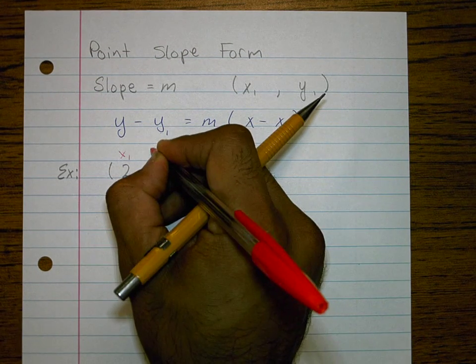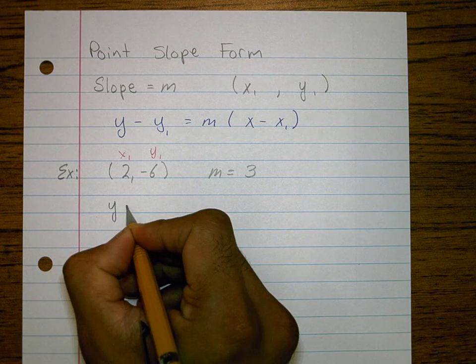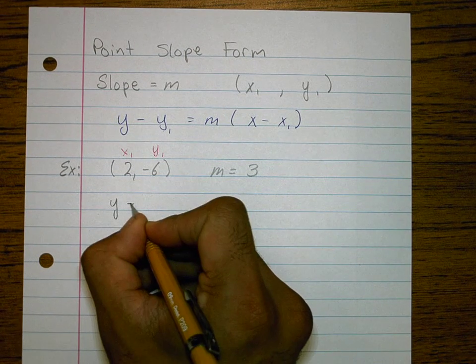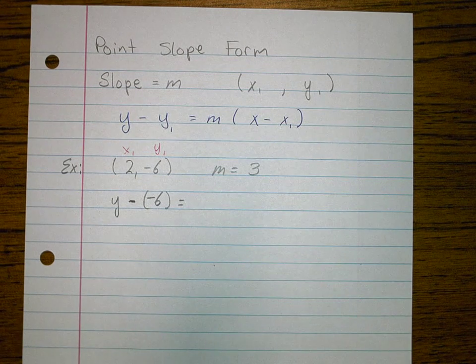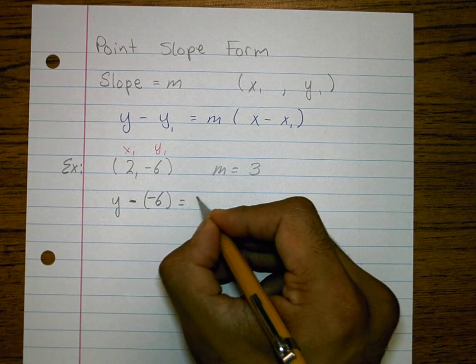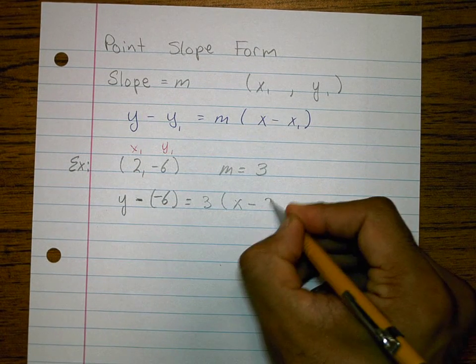I'm going to call this x1, y1. So when I start to write, I'm going to say y minus y1. In this case, that's negative 6. So I've got to do minus a negative equals the slope times x minus the x value, which is 2.